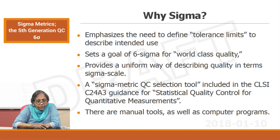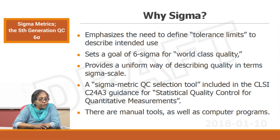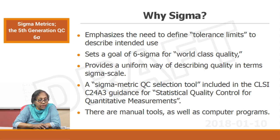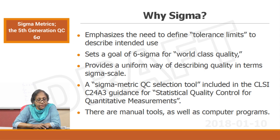Why are we talking about sigma? Because sigma emphasizes the need to define tolerance limits to describe intended use. It sets a goal of six sigma for world class quality and provides a uniform way of describing quality in terms of the sigma scale. A sigma metric QC selection tool is included in the CLSI C24A3 guidance for statistical quality control for quantitative measurements. There are manual tools as well as computerized programs — we will see a manual tool in this presentation.